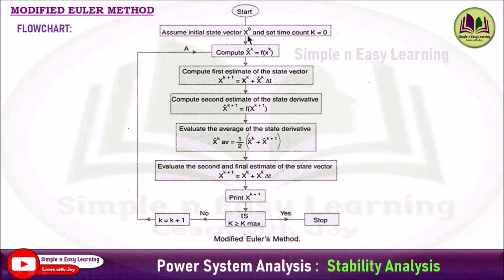The corresponding flowchart is: assume the initial state vector and set count k equal to 0, compute the first derivative, first estimate, then second estimate, then calculate the average value of the state derivative, then evaluate the second and final estimate of the state vector, then print that value, check the condition, increment the time count, and go to step 2. Iterate until k is greater than k-max. If this condition is satisfied, stop the algorithm. Now we are going to apply this algorithm to the power system problem.